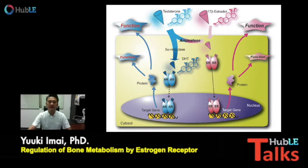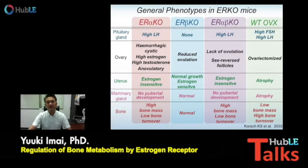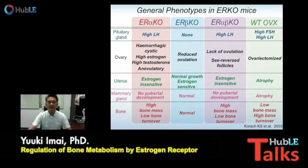To understand the effect of estrogen in bone metabolism, it is necessary to understand the function of estrogen receptor in bone metabolism. To understand the physiological function of estrogen receptors, ER systemic knockout mice were generated and analyzed. As a result, ER alpha rather than ER beta knockout mice exhibited the phenotypes of estrogen deficiency, though interpretation was complicated because of systemic disturbance in biosynthesis of sexual hormones.